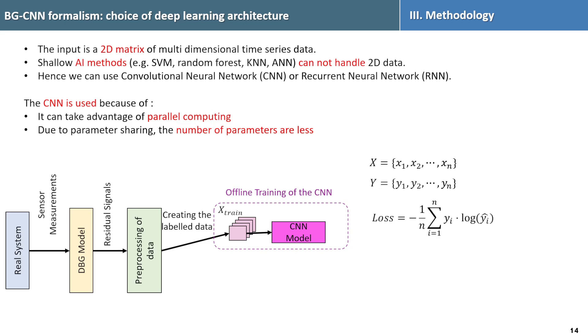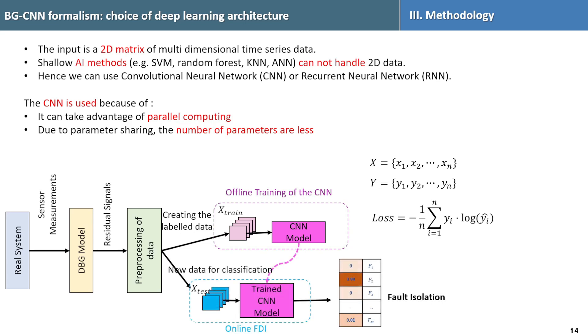After the model is trained, we transition to the online fault detection and identification method. In the real-time fault detection, up to the pre-processing steps, everything is same. Then, the obtained residual signals are pre-processed and fed into the trained CNN model to predict different fault classes. This encapsulates the fundamental summary of our proposed method for BG-CNN.